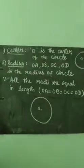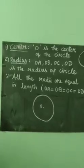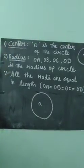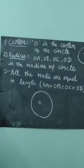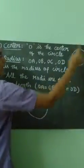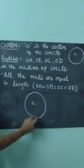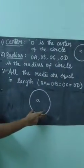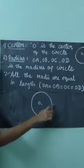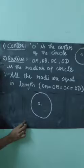Now take page number 7 — section 1.1.3: identifying the center, radius, and diameter of the circle. In one circle, how do we find out the center, radius, and diameter? First, center. We already know that a circle is perfectly round.